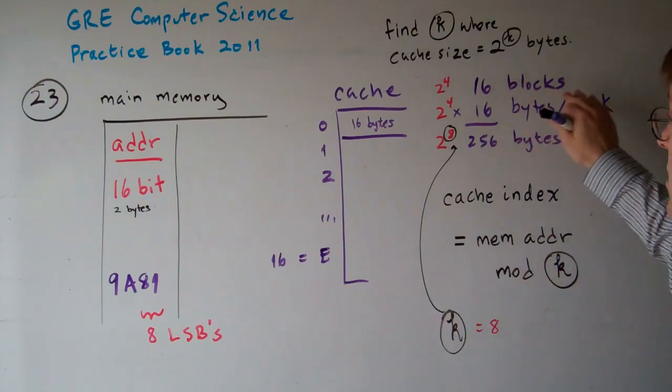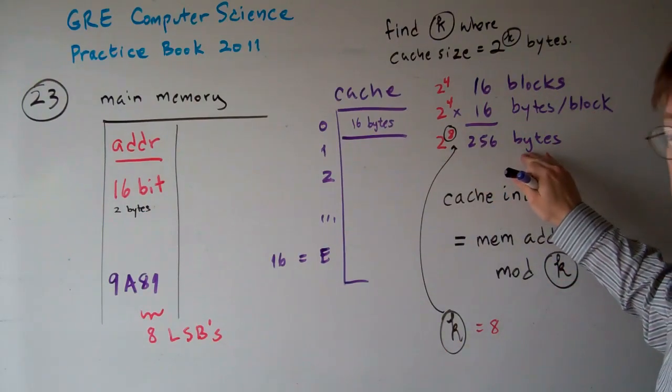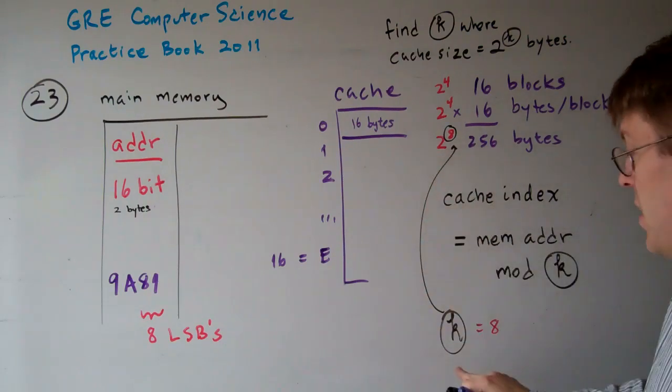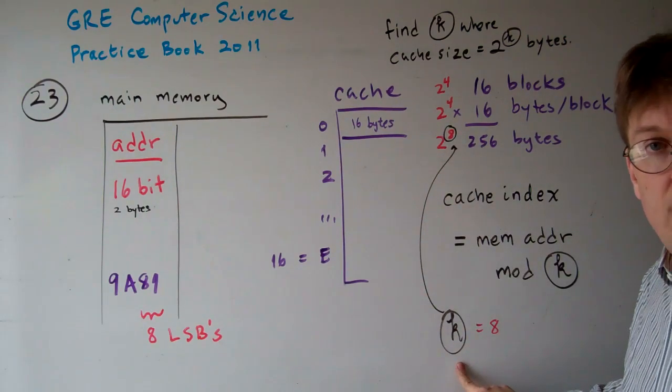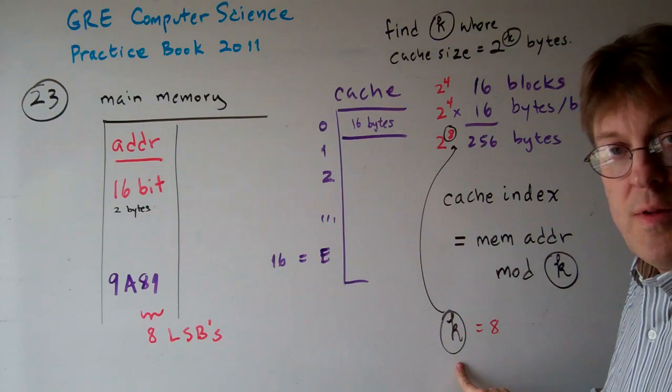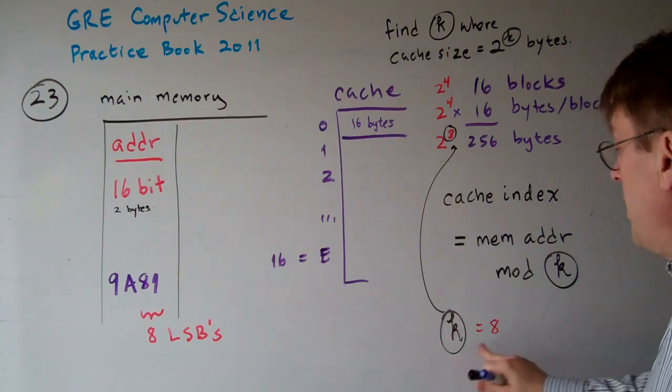So anyway, we have 16 blocks, 16 bytes per block, that's 256 bytes, that's 2 to the 8th. So k, k being the number of least significant bits we're going to use in the main memory address to map, is 8.